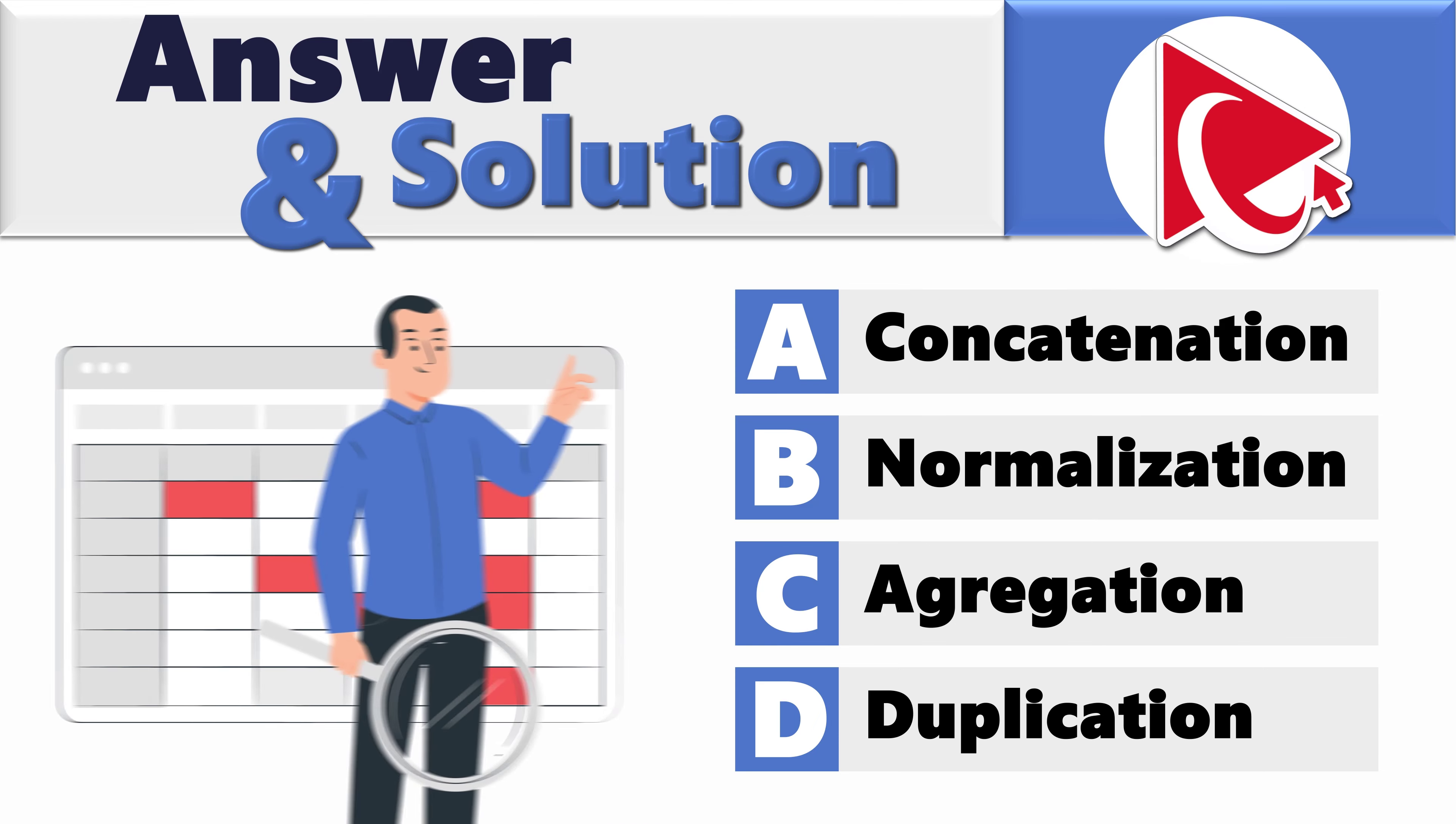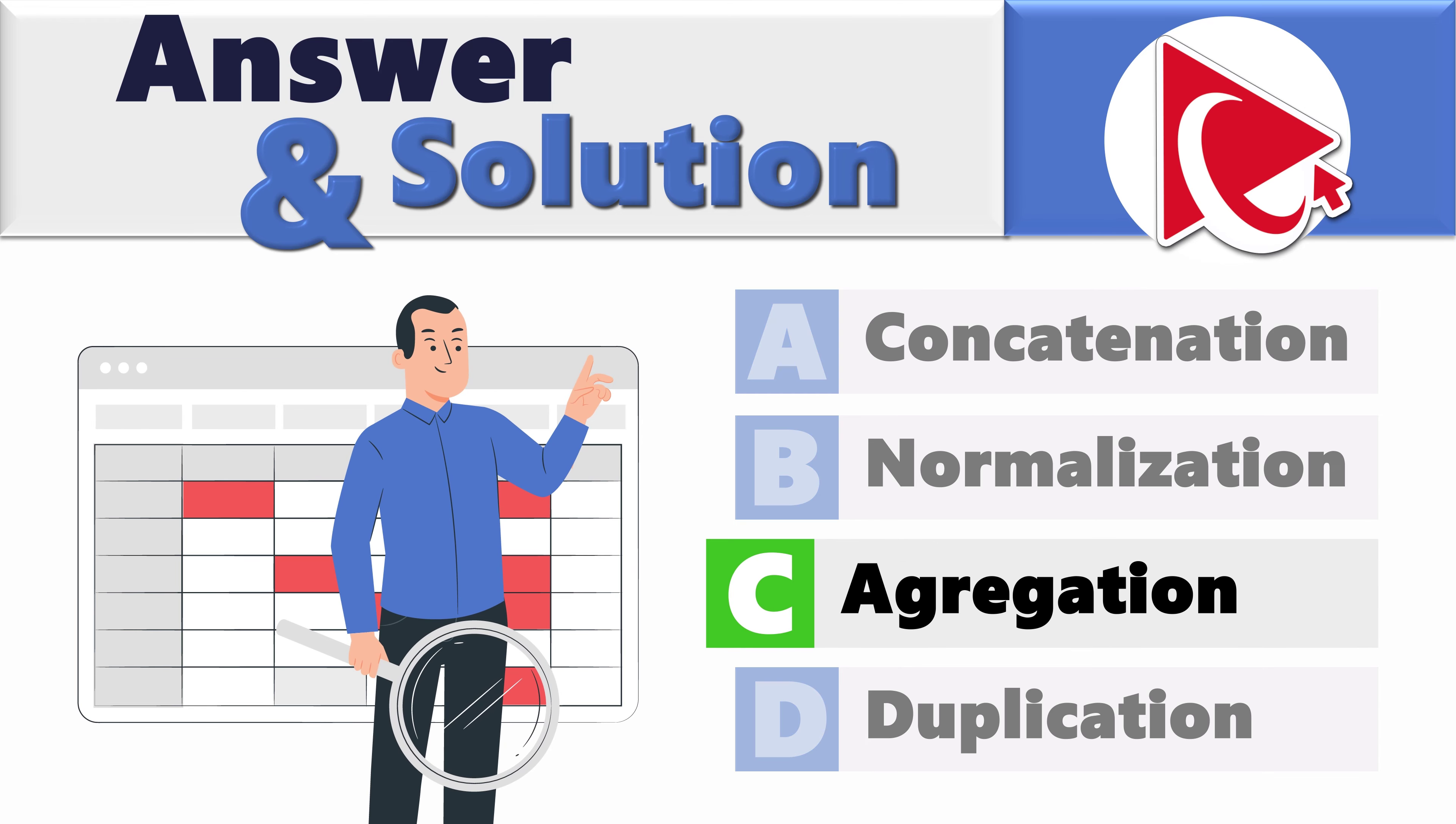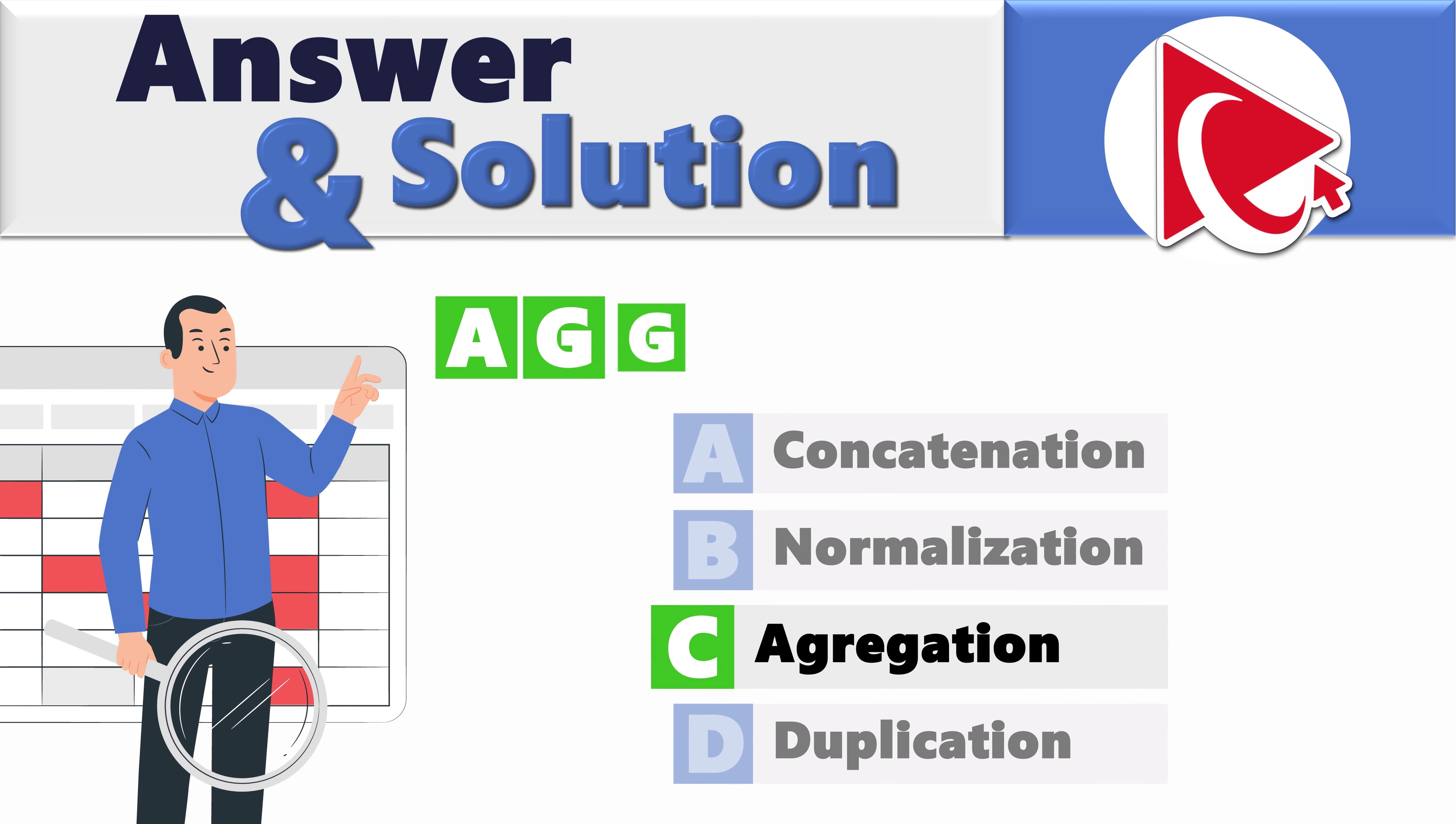I am pretty sure you figured it by now. The misspelled word is choice C: aggregation. The correct spelling is A-G-G, two Gs here in this word, R-E-G-A-T-I-O-N.